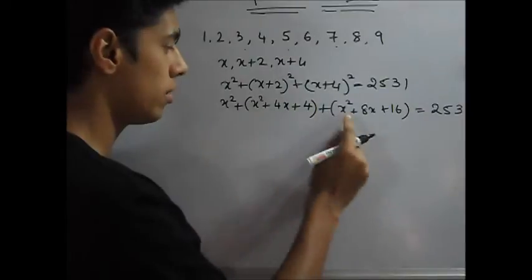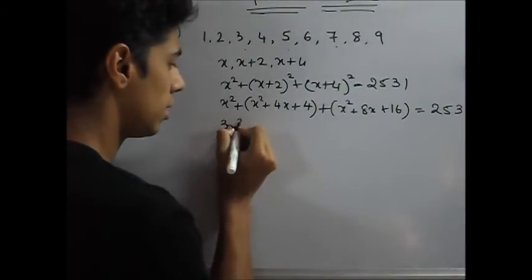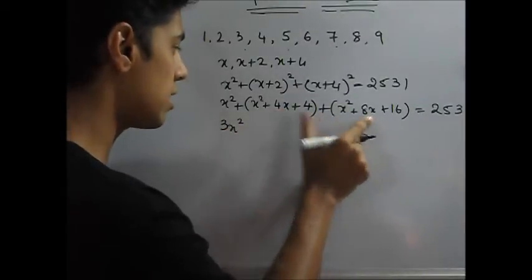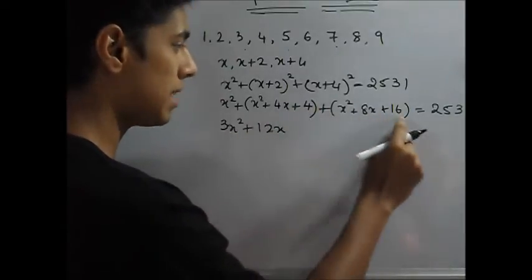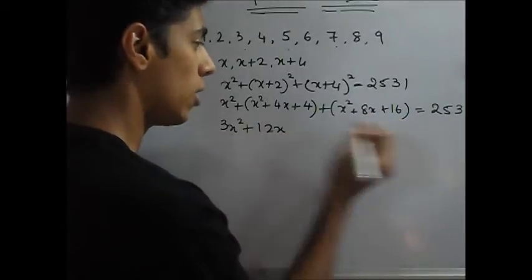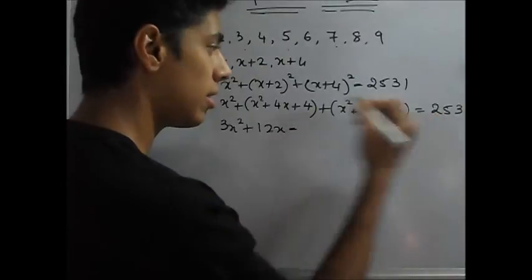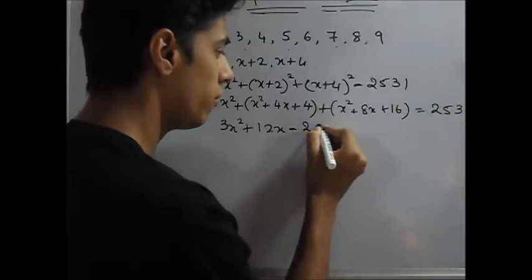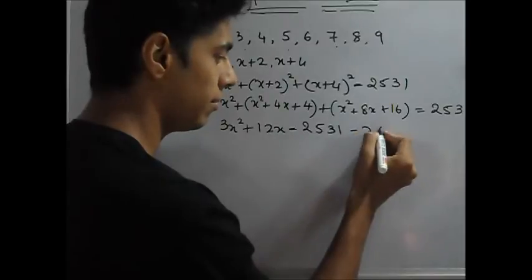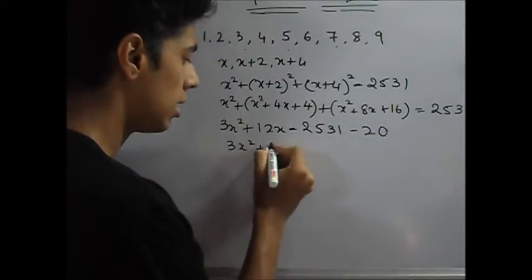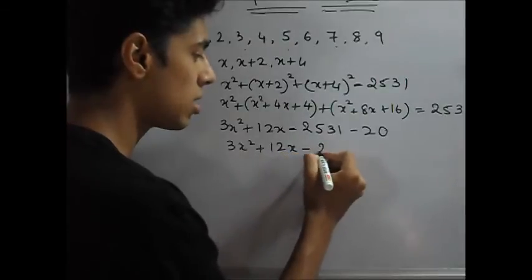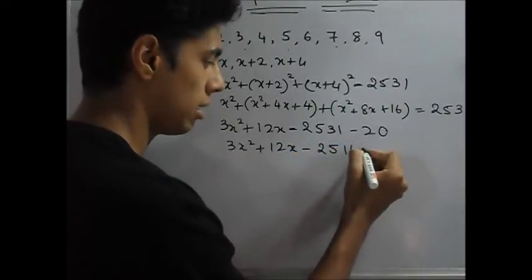Now x square you have 1, 2, 3, so you have 3x square. x is 8x plus 4x, so this is 12x. And you have 4 plus 16, that is 20. Now you take this on the other side, so it becomes 2531 minus 20.